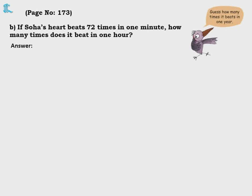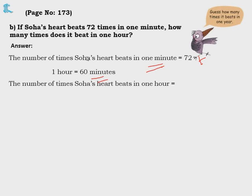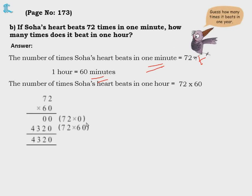If Soha's heart beats 72 times in one minute, how many times does it beat in one hour? One hour is 60 minutes, so 72 into 60: 0 into 2 is 0, 0 into 7 is 0; then 6 twos are 12 — write 2 carry 1; 6 sevens are 42 plus 1 is 43. So Soha's heart beats 4,320 times in one hour.